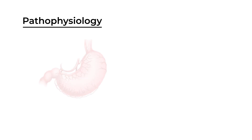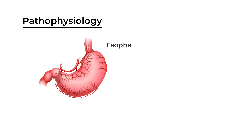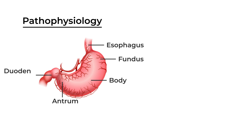Now let's talk about the pathophysiology of H. pylori. Looking at a basic diagram of the stomach: the part leading into the stomach is the esophagus, the top portion is the fundus, the major part is the body, the lower portion is the antrum, and it leads into the duodenum.